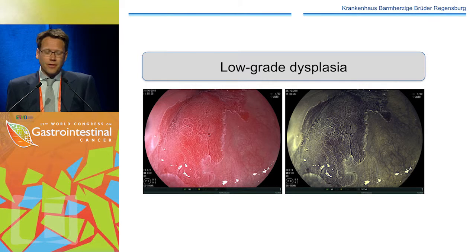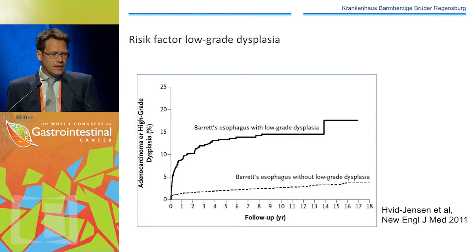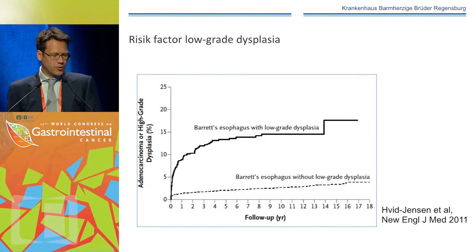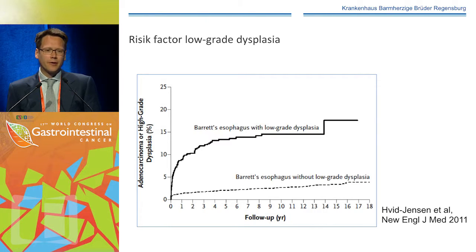Let's start with low-grade dysplasia. Should we treat this and how? It has been shown that low-grade dysplasia is a risk factor for the development of high-grade dysplasia and adenocarcinoma, as shown in a New England Journal paper, where patients with normal Barrett's esophagus without low-grade dysplasia were followed, and those who had low-grade dysplasia had a significantly higher risk for progression.